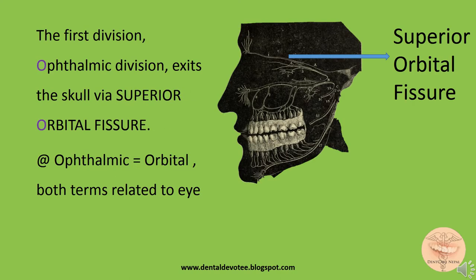The first division, the ophthalmic division, exits the skull via the superior orbital fissure. Both the terms ophthalmic and orbital are related to the eye.